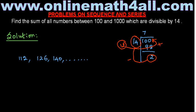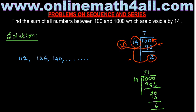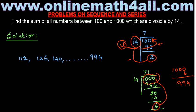My aim now is to get the last number between 100 and 1000 which is divisible by 14. To find the last number, I have to divide 1000 by 14. When I divide 1000 by 14, I get quotient 71 with remainder 6, because 71 times 14 is 994. So I subtract this remainder 6 from 1000, and I get 994. So 994 is the last number which is divisible by 14 between 100 and 1000.